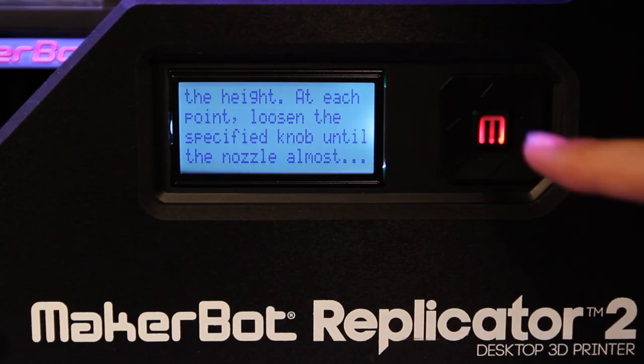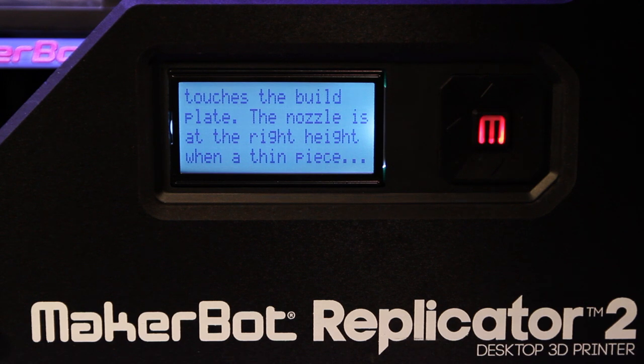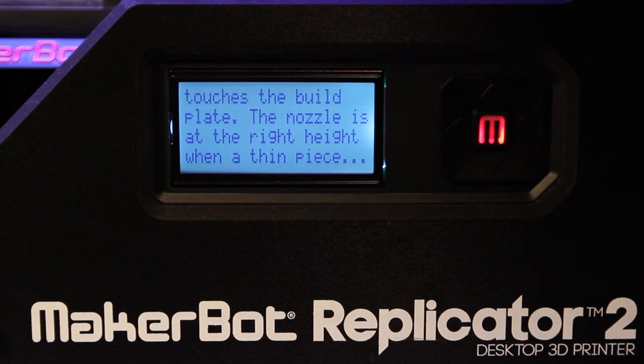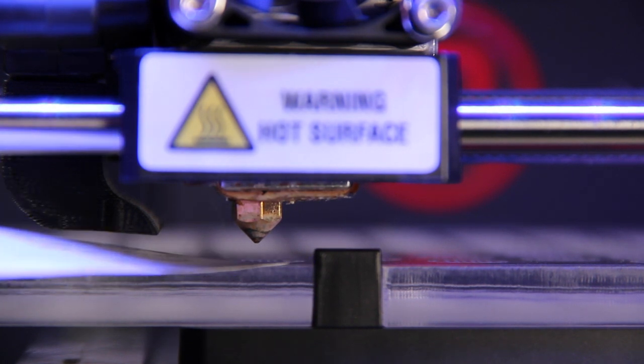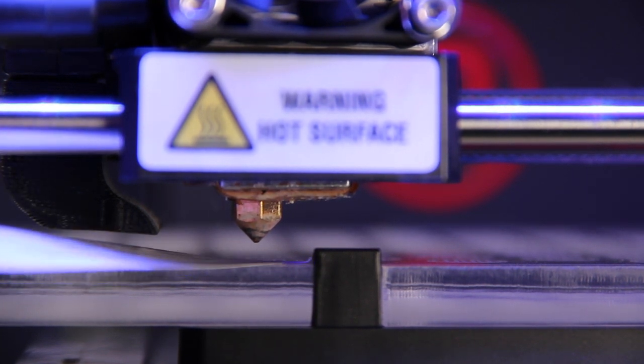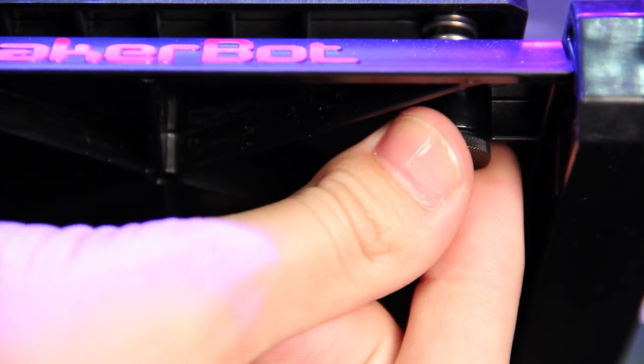At each position, you will be asked to slide the paper between the nozzle and the build plate, and to adjust the corresponding leveling knob below the build platform. If your platform is too far away from your extruder, you'll need to loosen the knob by turning it this way.